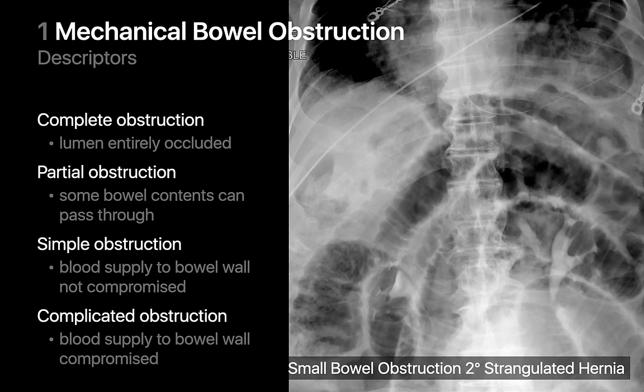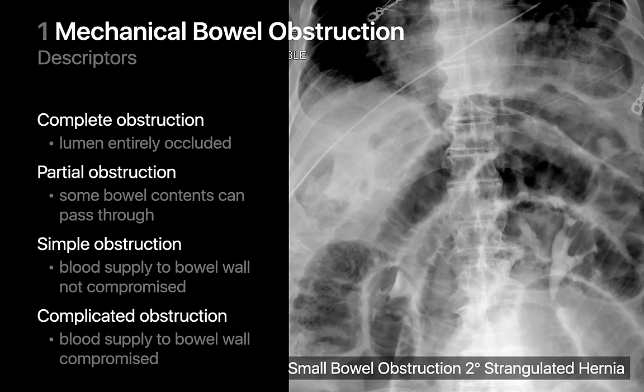A closed loop bowel obstruction results in multiple gas-filled segments of distended small bowel upstream and thickening of the valvulae conniventes, plainly visible on this abdominal x-ray. The stomach in this case is not dilated since it's being decompressed by a nasogastric tube.